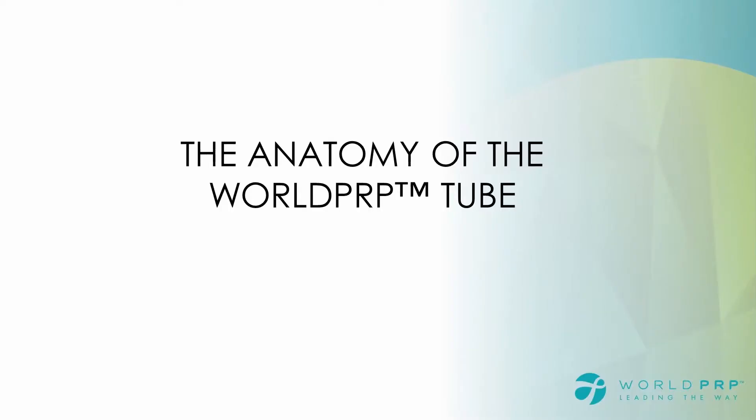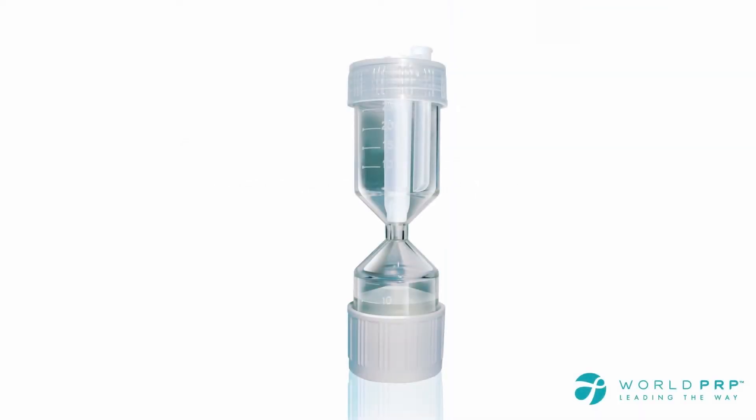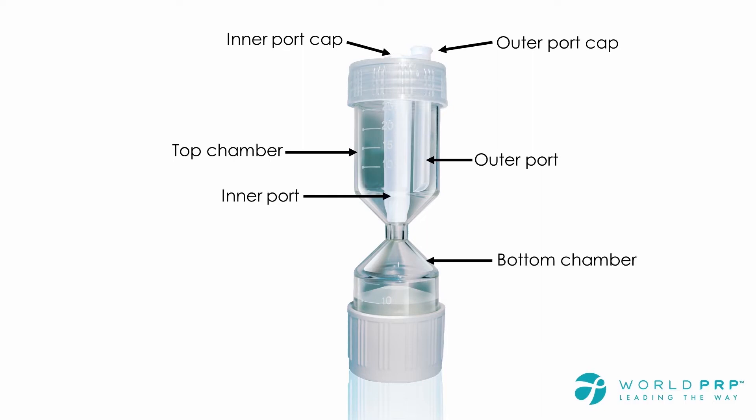World PRP tube anatomy overview. The World PRP components are outlined in the image. The outer port cap is used to carefully insert the collected blood sample through the outer port into the top chamber of the hourglass. It is also where after centrifugation you collect the quantity of desired platelet rich plasma. The inner port cap and the inner port is an opening where a 1 ml syringe can be inserted at the surface of the buffy coat for its removal by aspiration from the neck of the device. The inner port also acts as a separator between the top chamber and the bottom chamber.